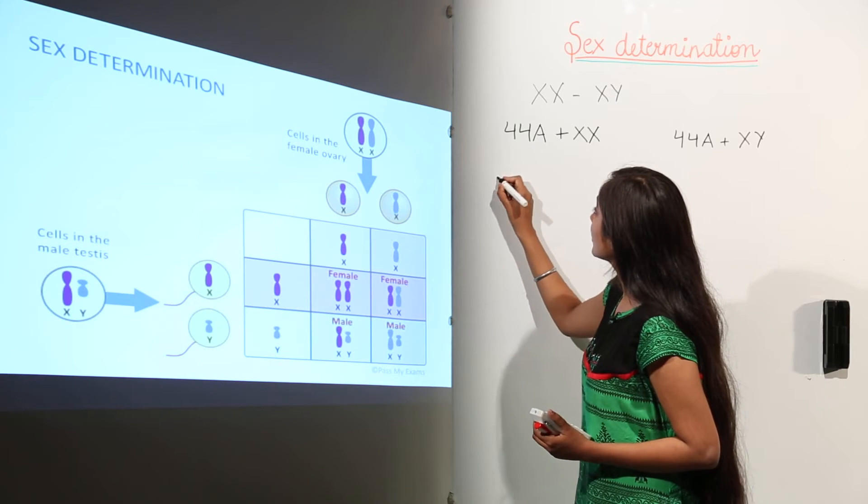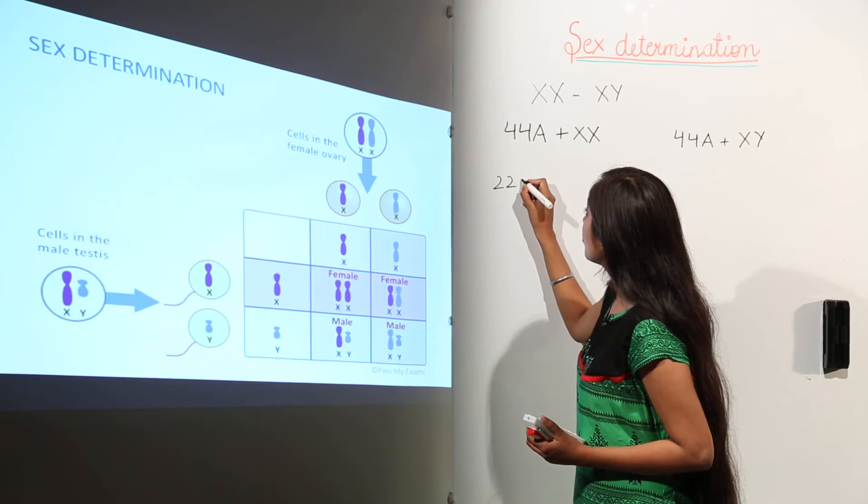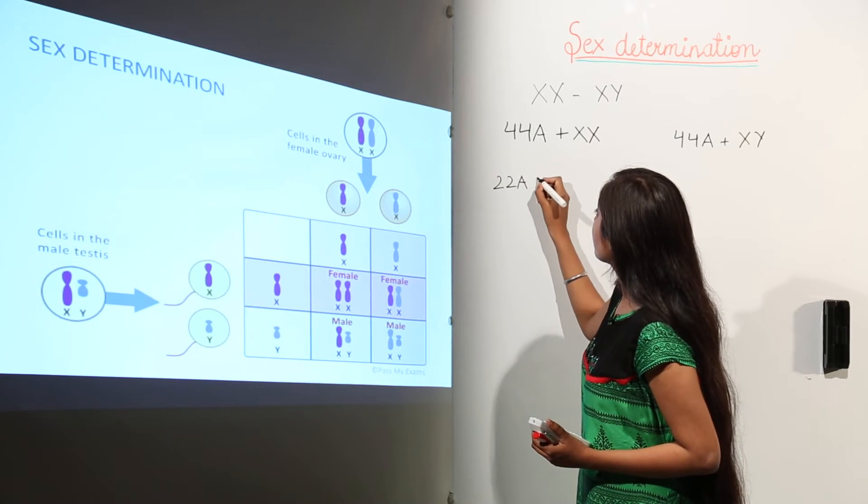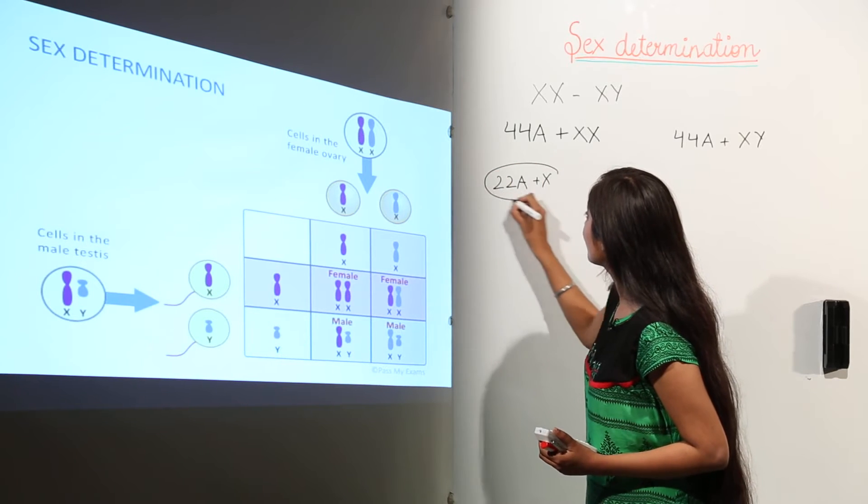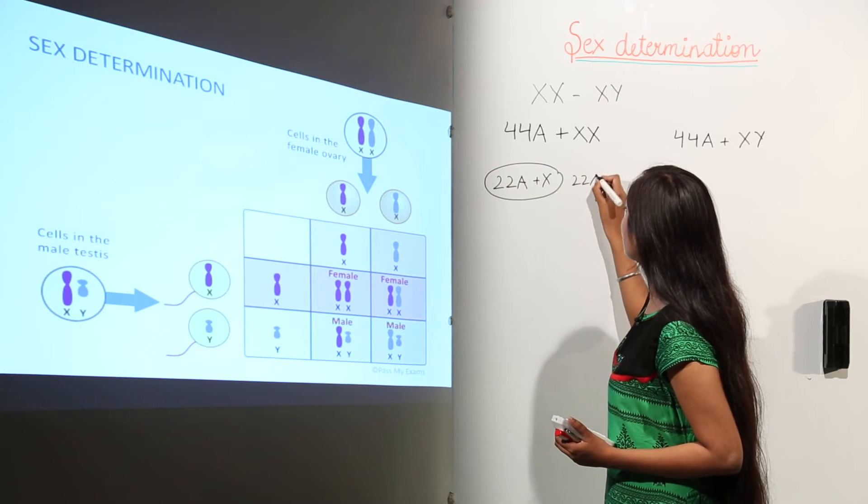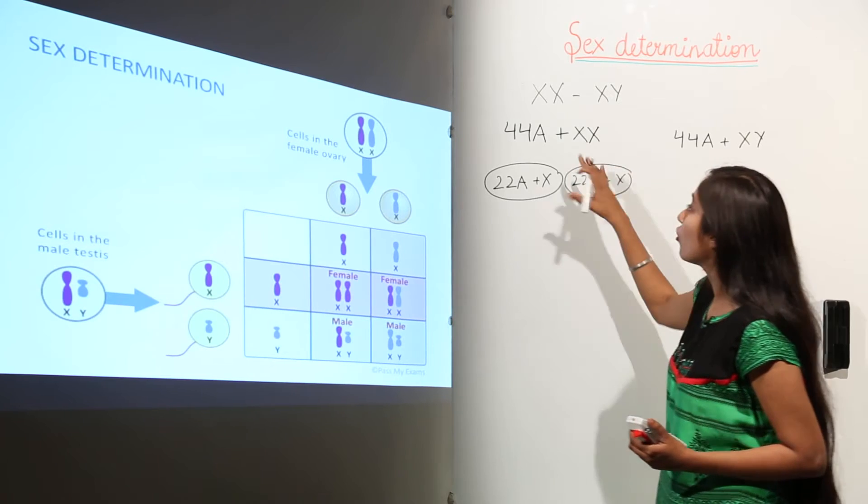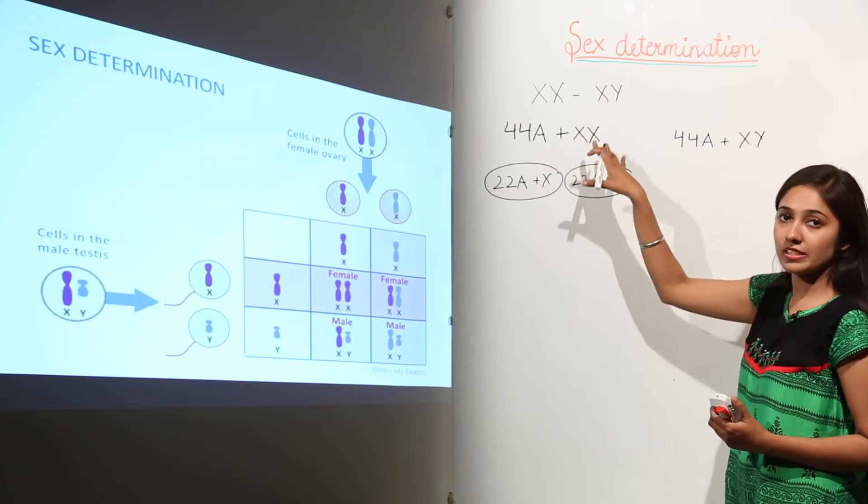there is half the number of chromosomes. The gametes will be having 22 autosomes plus X in case of females and the other gamete is also going to have the same. That is why they are homogametic females.